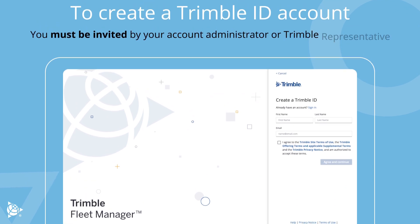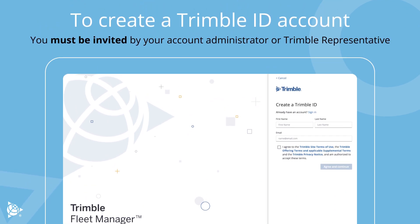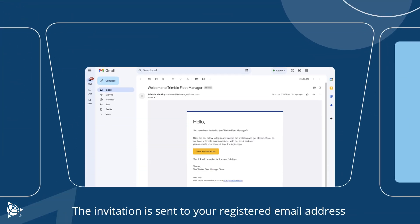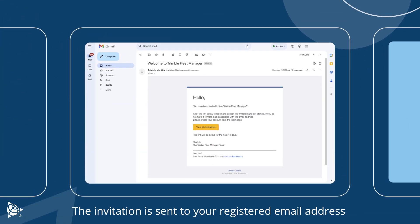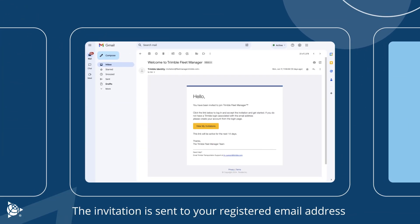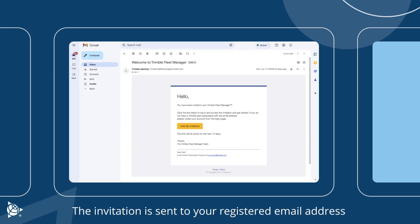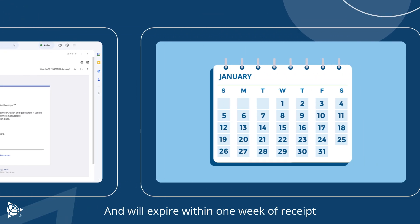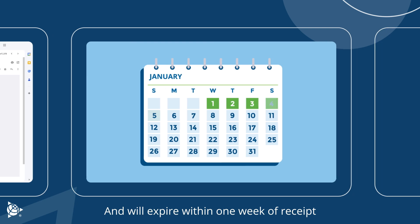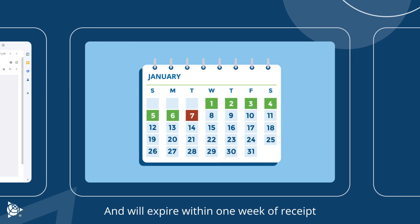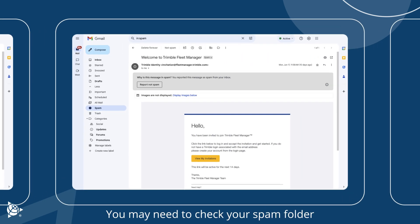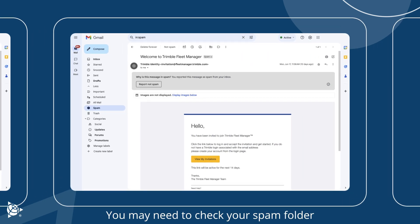To create a Trimble ID account, you must be invited by your account administrator or Trimble representative. The invitation is sent to your registered email address and will expire within one week of receipt. You may need to check your spam folder.